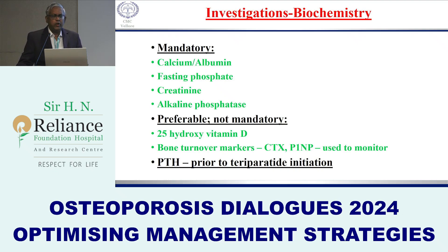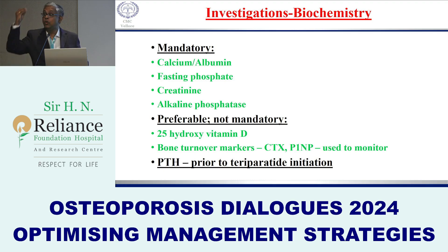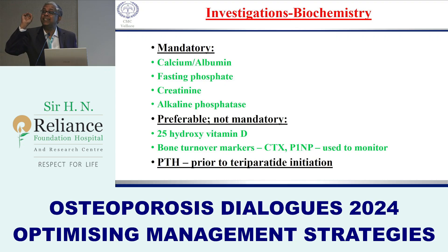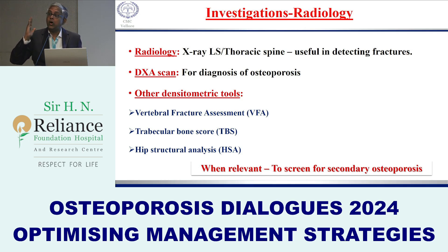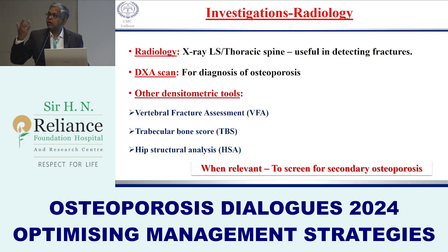Twenty-five hydroxy vitamin D measurement is costly and may not always be feasible in Indian settings. Bone turnover markers — bone resorption markers and bone formation markers — are useful. PTH should be measured at least before starting an anabolic agent like teriparatide, to check for secondary hyperparathyroidism. Radiology is very important — for all women above 60, we do a lateral spine X-ray to look for fractures, as DEXA may not detect all cases.